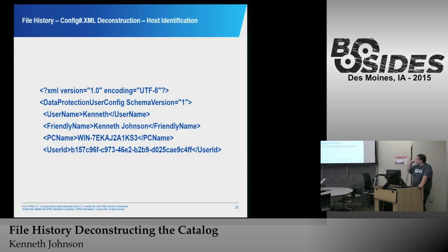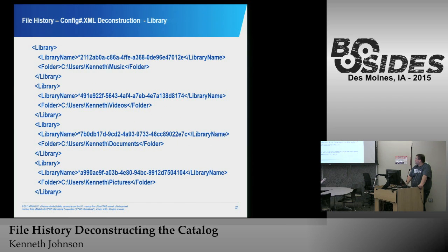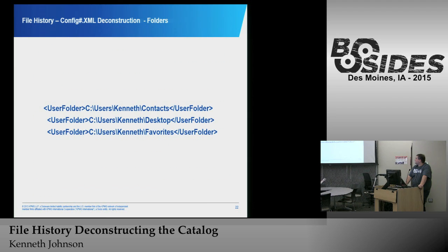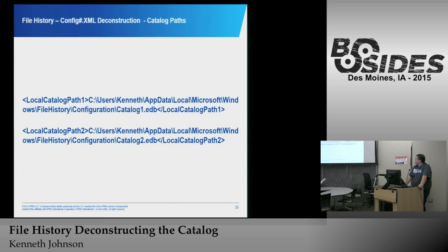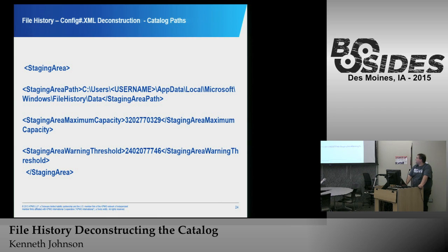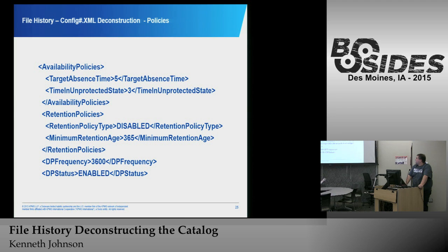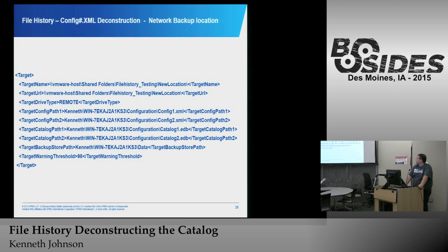In the configuration file we have the username, the friendly name — which is inherited if you're using a Windows Live account — the PC name, and the user ID which is unique to the PC. In the libraries section we have videos, music, and documents folders — all default Windows. Custom libraries are called user files. The catalogs are under configuration as catalog one and catalog two. The configuration also shows the disk size being backed up to, the retention policy (disabled or enabled), how long to retain, and the frequency in seconds. It also shows where you're backing up to — in this case, a remote server.